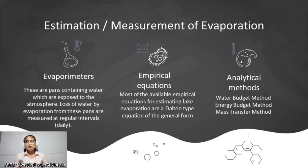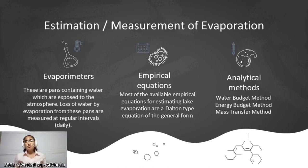Next is the estimation or measurement of evaporation. The first method uses evaporometers — pans containing water which are exposed to the atmosphere. Meteorological data such as humidity, wind velocity, air and water temperatures, and precipitation are also measured and noted along with evaporation.